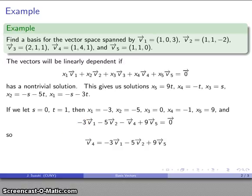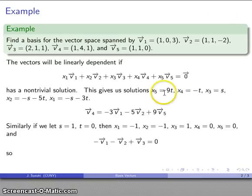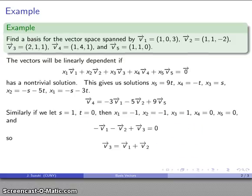And that means that I can find v4 in terms of v1, v2, and v5. Likewise, same parametrization, I'm going to let s equal 1, t equals 0. That wipes these two out, and I get a different solution, minus v1, v2, plus v3. And so that allows me to solve for v3. And I have vector v3 as the linear combination of v1 and v2. I have v4 as a linear combination of vectors v1, 2, and 5.